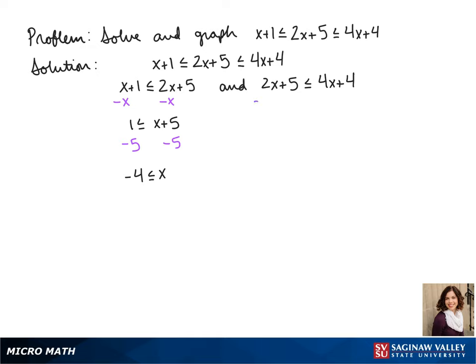On our other part, again we get the variables to the same side. We now have 5 is less than or equal to 2x plus 4. We subtract 4 and we get 1 is less than or equal to 2x.